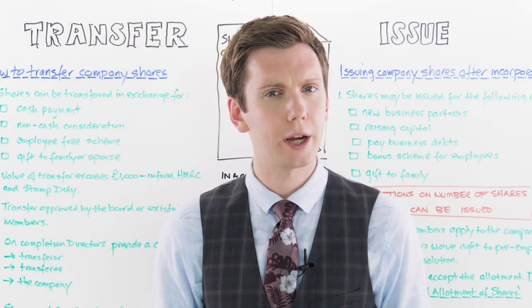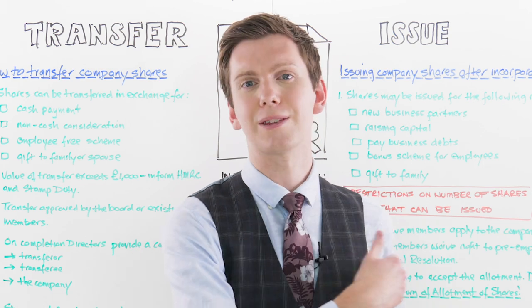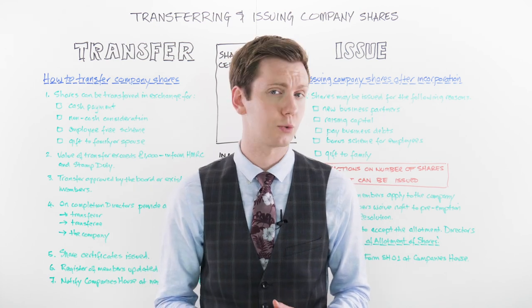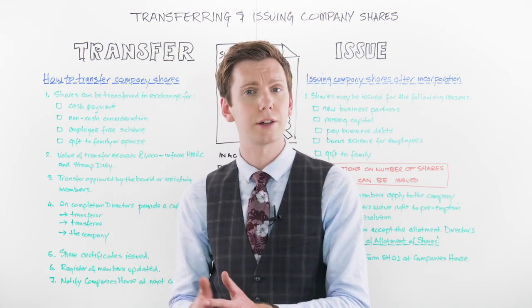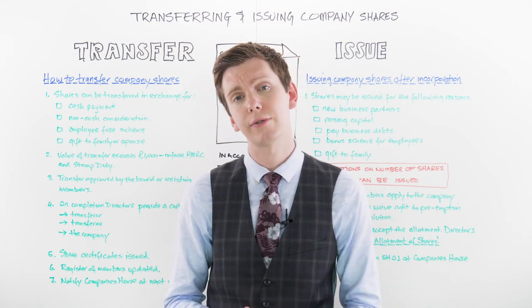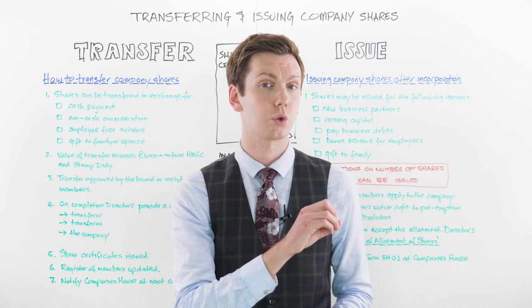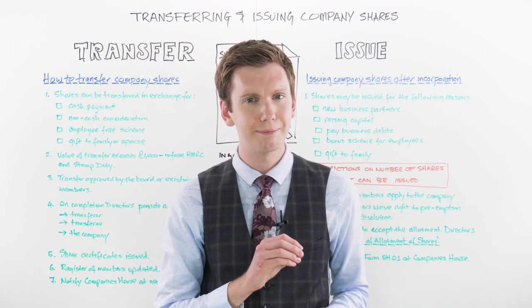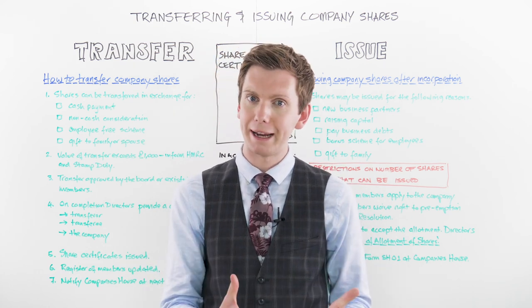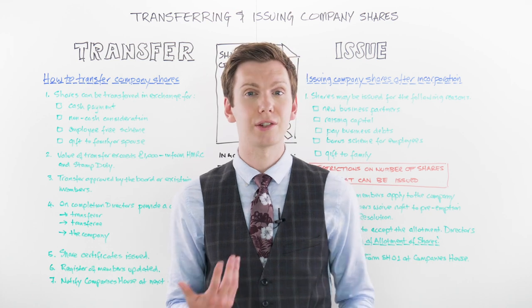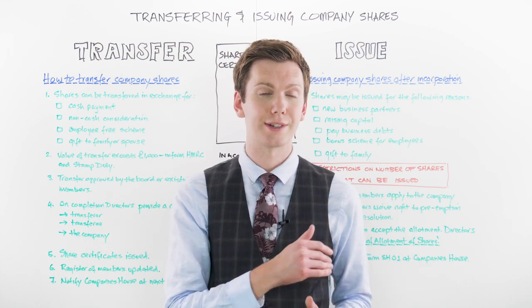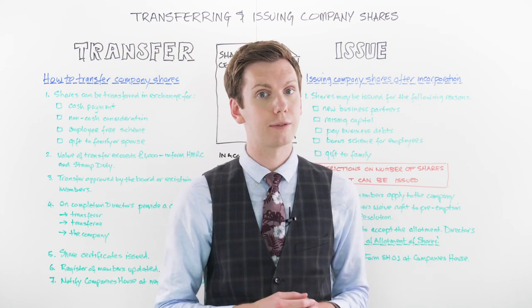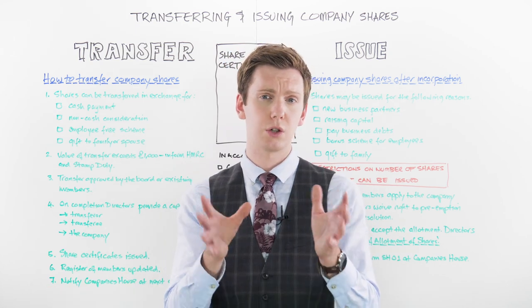If you wish to transfer shares after your company is formed, you'll need to start by completing a stock transfer form. The form will include information such as your company name and registration number, the quantity and class of shares being transferred, the name and address of the existing shareholder (known as the transferor), and the name and address of the new shareholder (known as the transferee). You'll also need to include the amount paid for the shares as well as details of any non-cash payments included as part of the transaction.